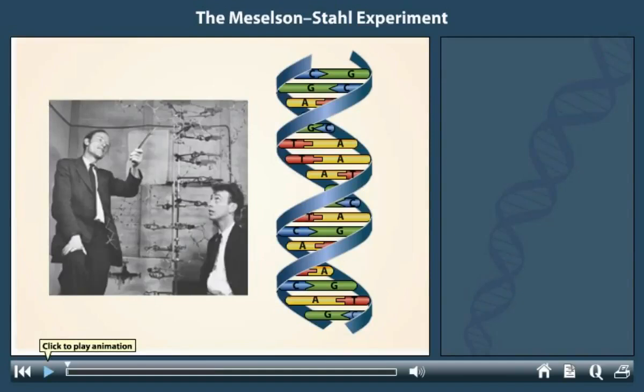In 1953, James Watson and Francis Crick built their model of the structure of DNA, the principal features of which are still accepted today. DNA consists of two strands that are complementary in base sequences to each other. A cytosine base in one strand always pairs with a guanine base in the other. An adenine base in one strand always pairs with a thymine base in the other.